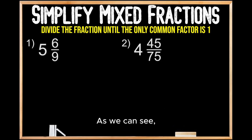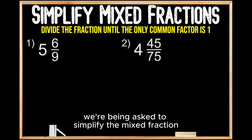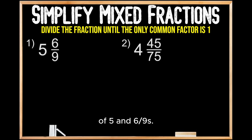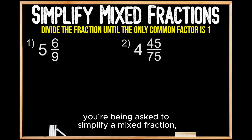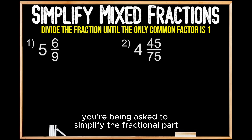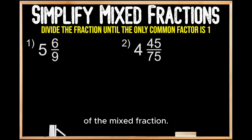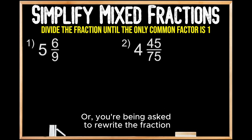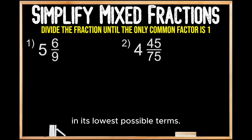As we can see, for question number one, we're being asked to simplify the mixed fraction of five and six-ninths. Any time that you're being asked to simplify a mixed fraction, you're being asked to simplify the fractional part, or rewrite the fraction in its lowest possible terms.